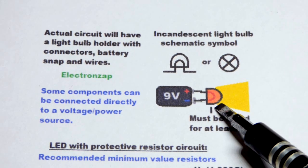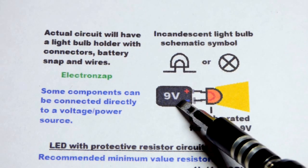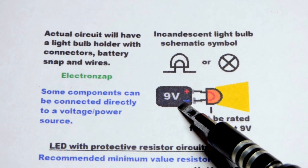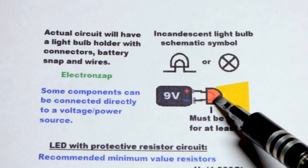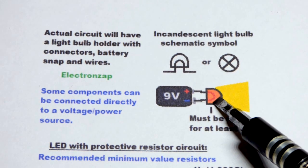Some components can be plugged directly to a power supply or voltage. As long as they are rated for that voltage, they will limit the current. A light bulb—an incandescent light bulb I should say—is one of them.